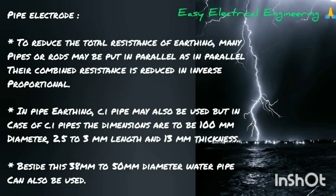The second type is pipe or rod electrode. To reduce the total resistance of the earthing, many pipes or rods may be put in parallel, as in parallel their combination resistance is reduced in inverse proportion. In pipe earthing, CI pipe may also be used, but in case of CI the dimensions are to be 100 mm diameter, 2.5 to 3 meter length, and 13 mm thickness.